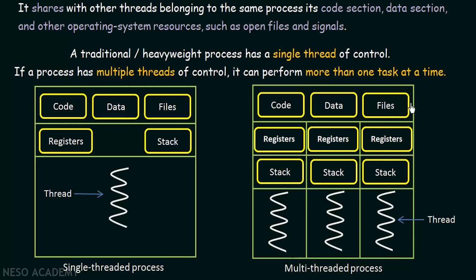In contrast, here we have another diagram showing a multi-threaded process. This whole block represents a single process having multiple threads. There are three threads in this process and each of these threads has its own stack and registers. The code section, data section, and files belonging to this process are shared by all three threads. So this process can perform multiple tasks at a time because each thread will be performing a different task.